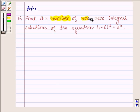find the number of non-zero integral solutions of the equation |1 - i|^x = 2^x.